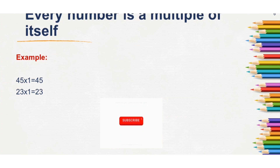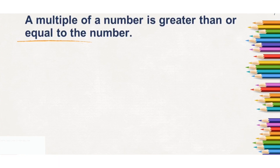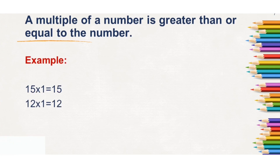Look at the third property: a multiple of a number is greater than or equal to the number. It can be greater or equal, but it cannot be lesser. Like, 15 by 1 is 15 — it cannot be less than 15. And 12 by 1 is 12 — it cannot be less than 12.